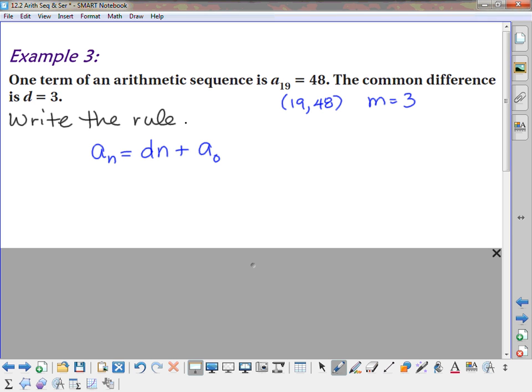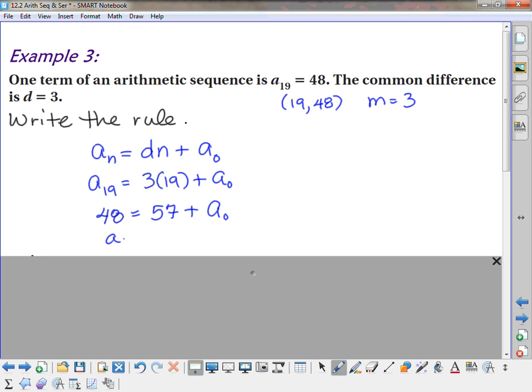So, to write the rule, essentially you're just doing y equals mx plus b. But instead of writing y equals mx plus b, I write a sub n equals dn plus a sub 0. So, a sub n, we'll go ahead and use our a sub 19, is equal to my difference of 3 times the 19 plus a sub 0. And I know a sub 19 is 48, so I'll go ahead and put the 48 in. 3 times 19 is 57. And so, if I subtract 57 from both sides, a sub 0 comes out to negative 9. So, that means that a sub n is equal to 3n minus 9. Do you guys see how it's very similar to what we did when we were just finding the equation of a line, given the slope and a point? It's essentially the same thing, we're just using different letters, that's all.